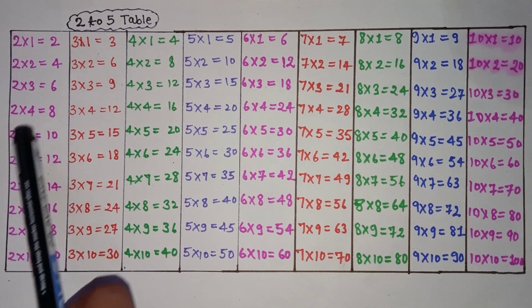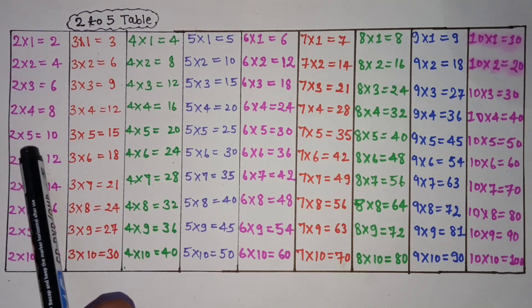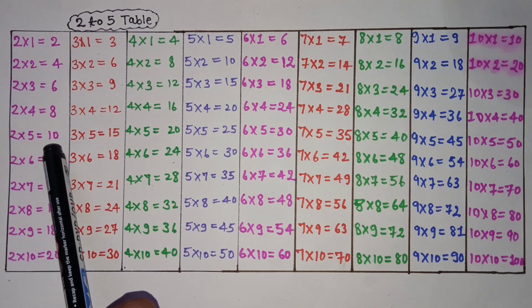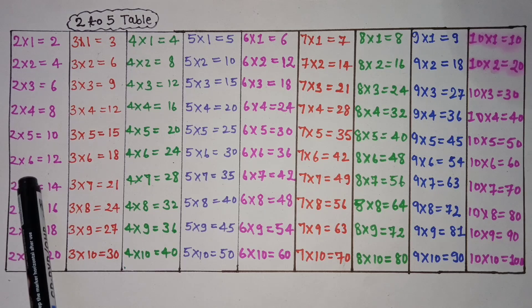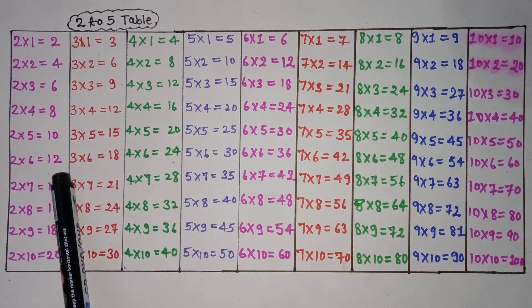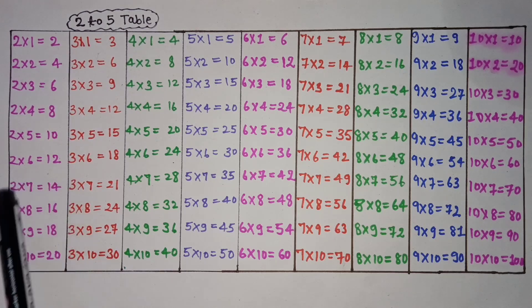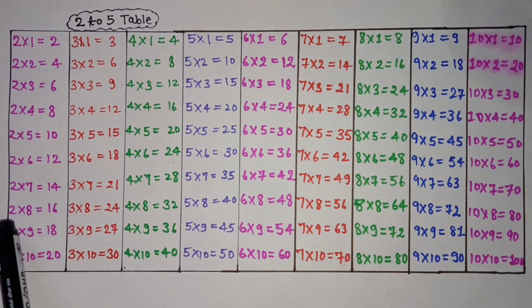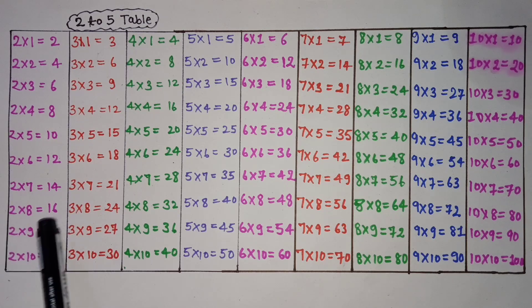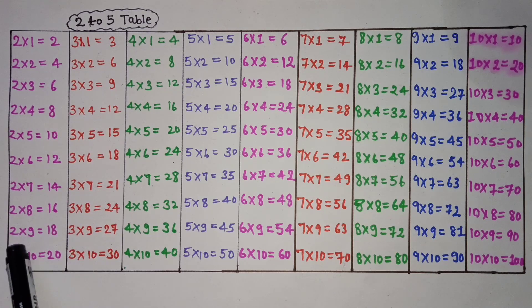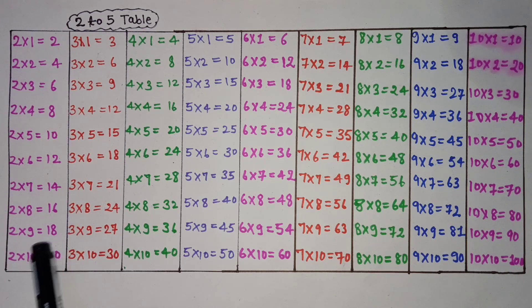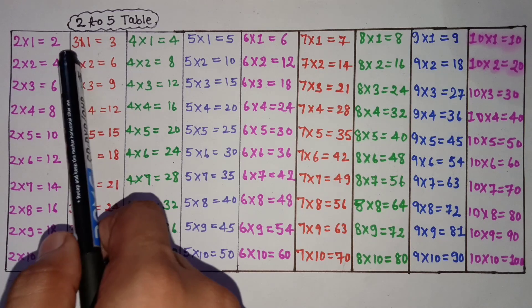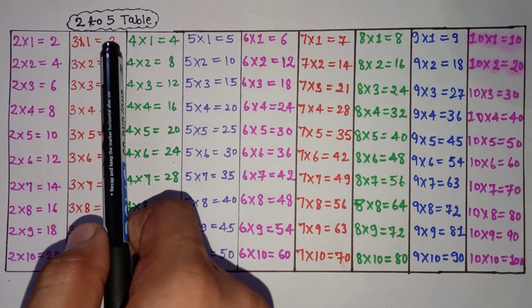2 5 is 10, 2 6 is 12, 2 7 is 14, 2 8 is 16, 2 9 is 18, 2 10 is 20. 3 1 is 3.